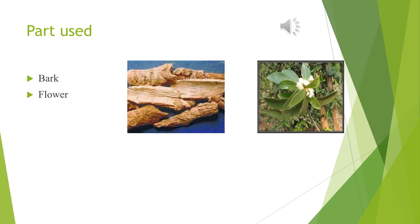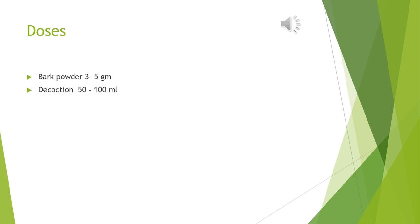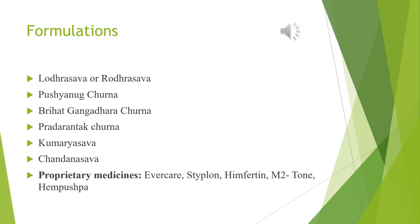Useful part: The useful parts of this plant Lodhra are the bark and flower. Doses: In powder form the dose is 3 to 5 grams, and in decoction form it is 50 to 100 ml. Formulations: Classical formulation Lodhra Sava or Rodhra Sava is indicated in menorrhagia, leucorrhea, skin diseases, bleeding piles and Grahani (IBS — Irritable Bowel Syndrome).